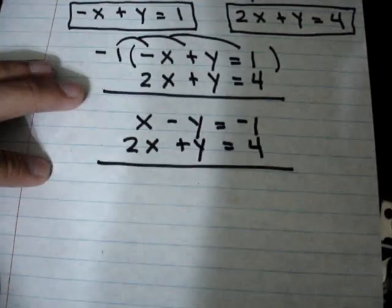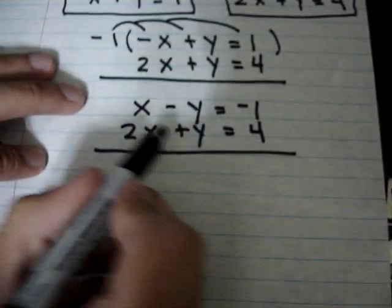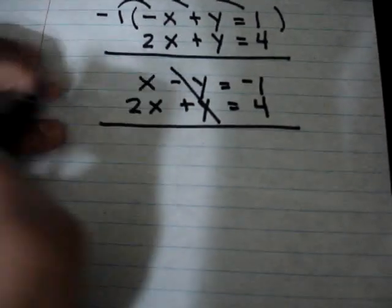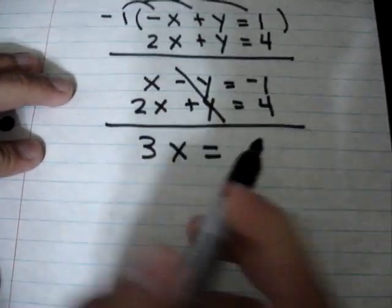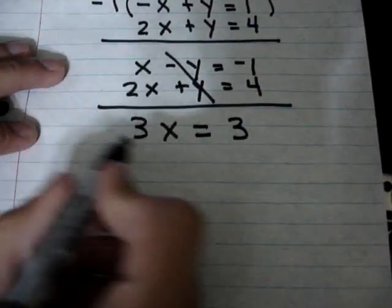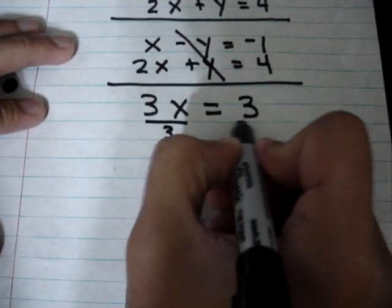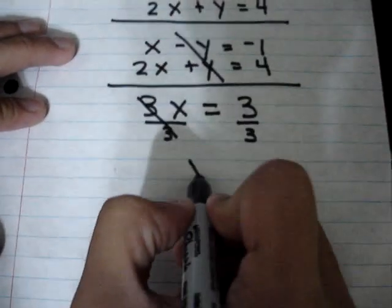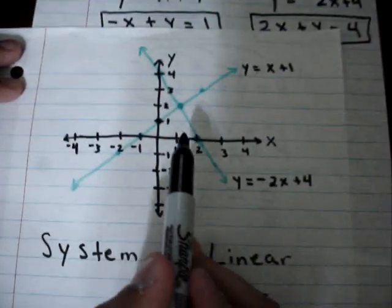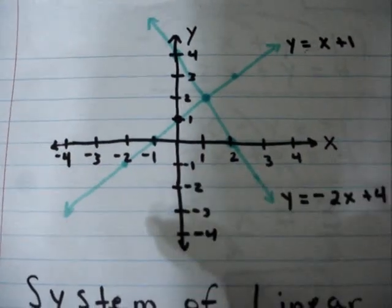Now it's very simple to eliminate the y variable. Negative y plus positive y cancels out. The only variable left is x. So we add: 2x plus 1x is 3x, and negative 1 plus 4 is 3. We solve for x by dividing by 3, and x is equal to 1. That's the first answer. And if you look at the graph, you can see that this point is where x is equal to 1.